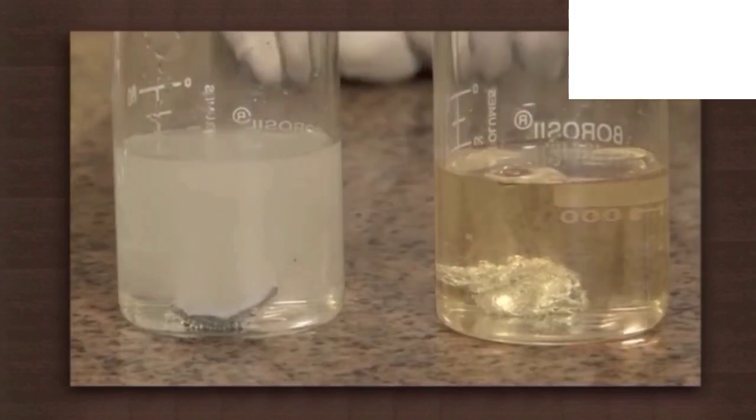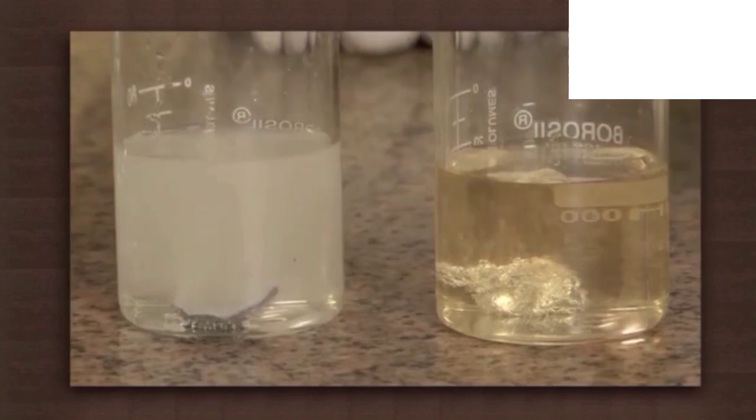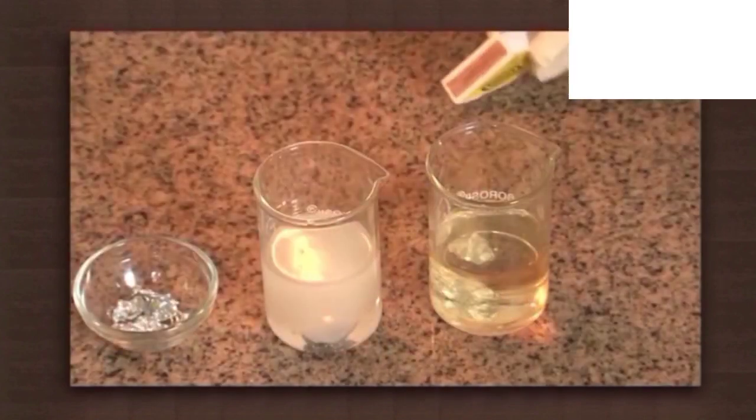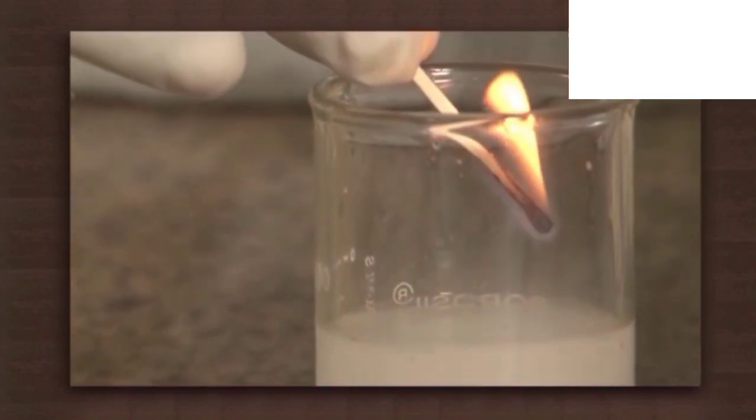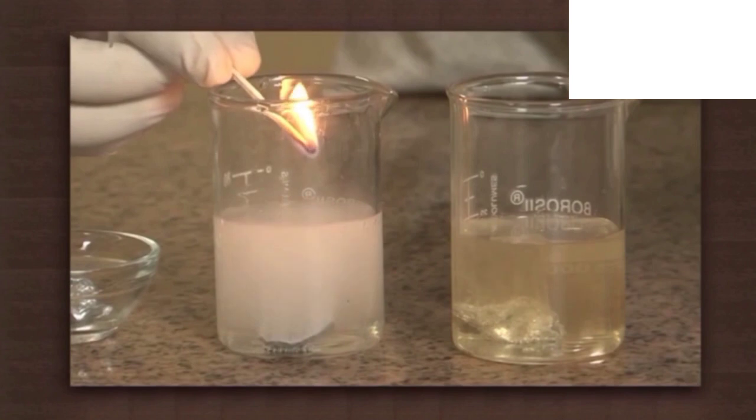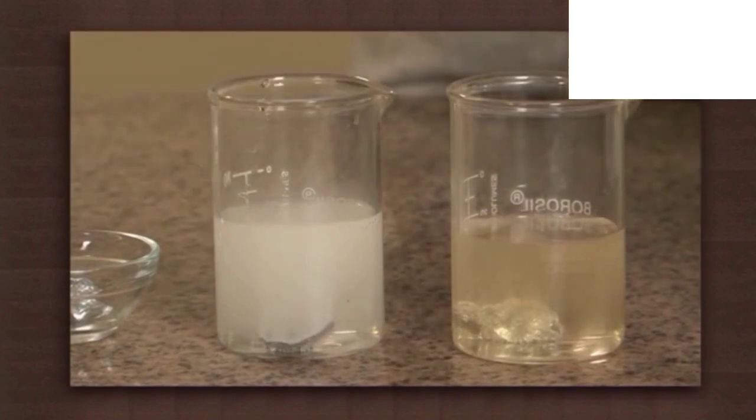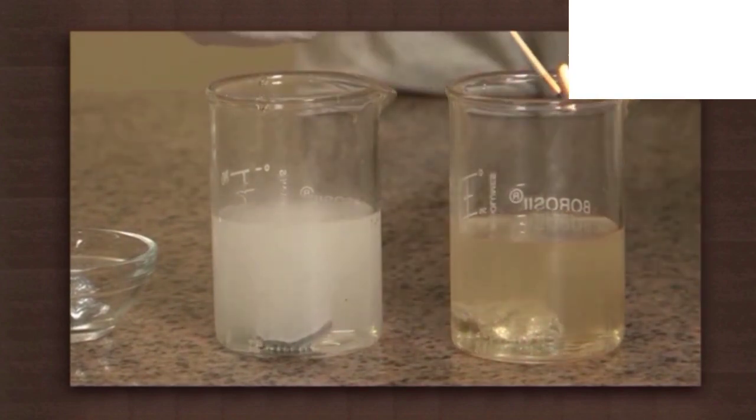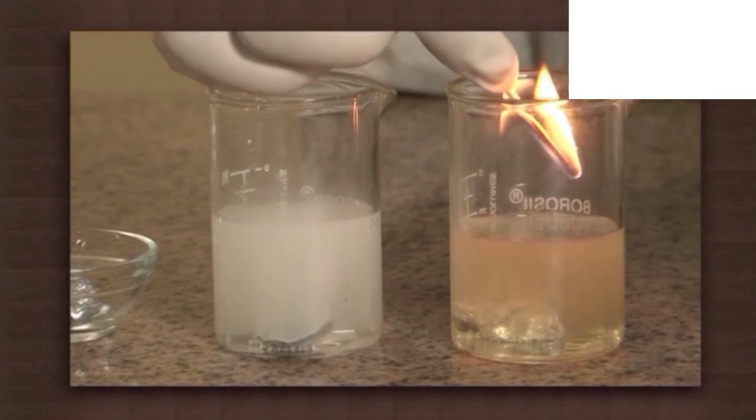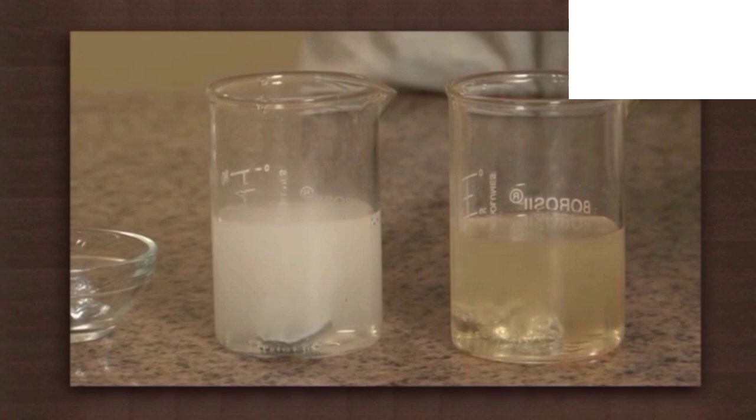We can see a colorless gas coming out of the beakers. What is this gas? Let us test this gas by bringing a matchstick to the mouth of the beaker. We observe that the matchstick burns with a pop sound. The gas which burns a matchstick with pop sound is hydrogen gas. Hence, we can conclude that metals react with acids to liberate hydrogen gas.